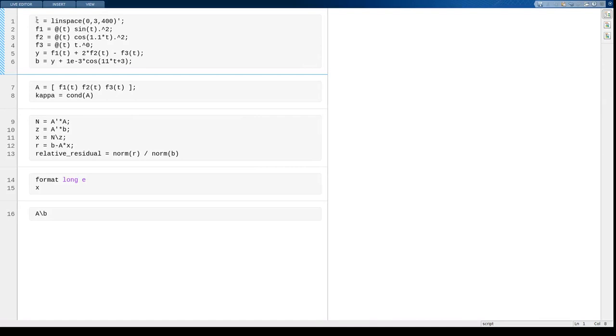I'm going to demonstrate the normal equations by a least squares fitting problem. I'm going to generate the data artificially this time. So here are some equally spaced time values. And then I'm going to use these three functions to generate my data as well as my fitting matrix.